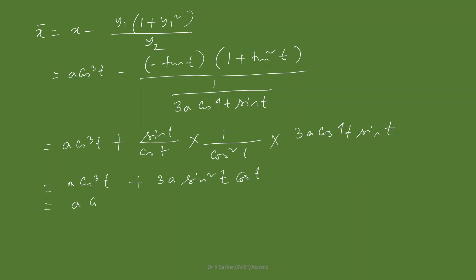Writing sin²t = 1 - cos²t, we expand: x̄ = a·cos³t + 3a(1 - cos²t)·cos t. We see -3a·cos³t and +a·cos³t combine, giving x̄ = 3a·cos t - 2a·cos³t.